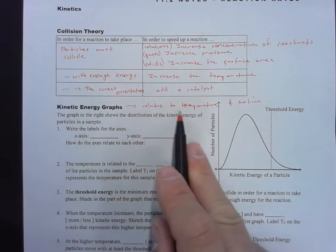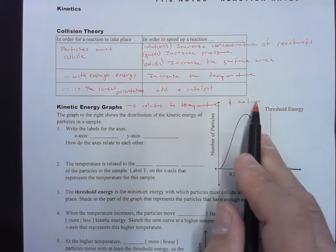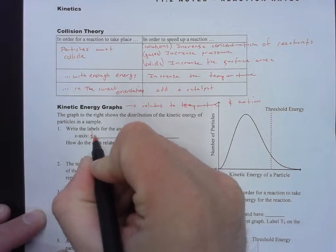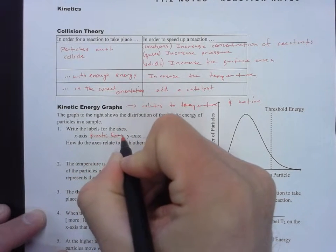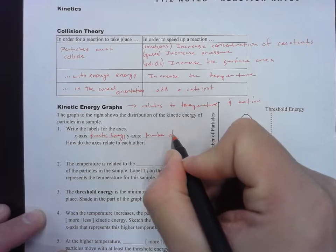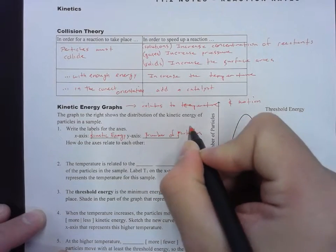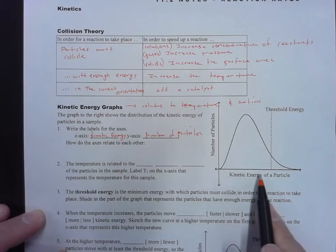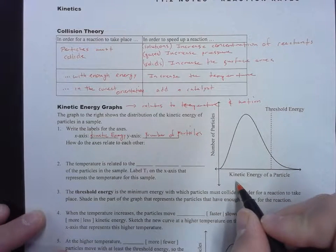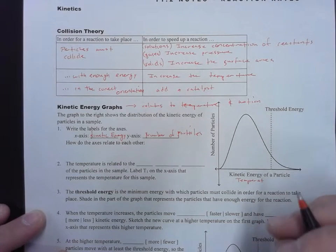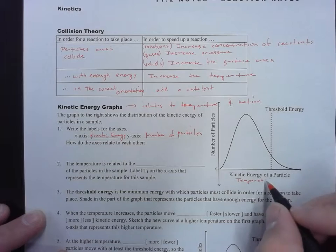Write the labels for the axes. The x-axis is kinetic energy, and the y-axis is the number of particles. The kinetic energy of the particles is essentially the temperature, because temperature of a sample is the average kinetic energy of all the particles moving in that sample.